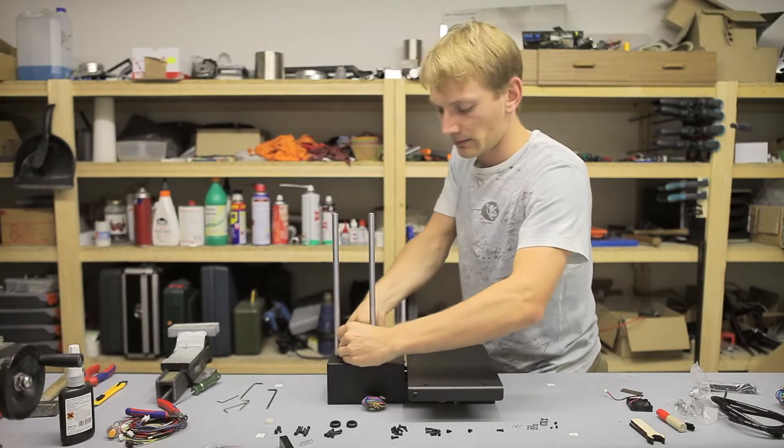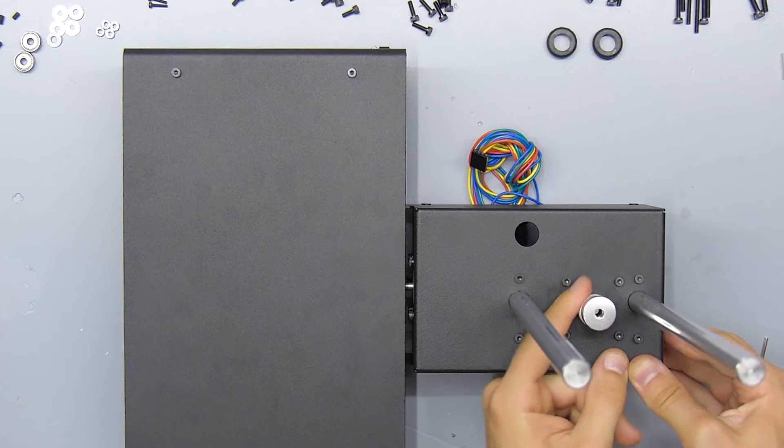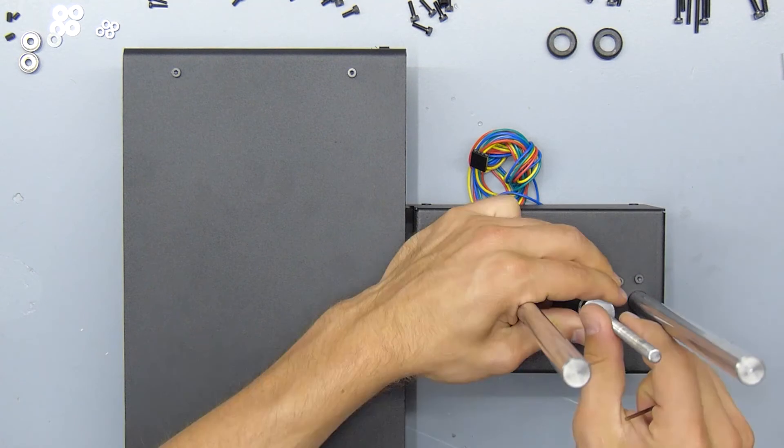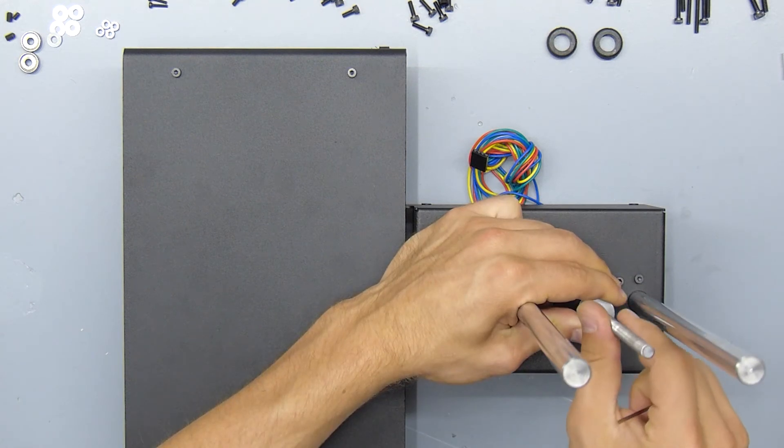Now, the coupler has two ends, one with a bigger and one with a smaller hole. If you install it upside down, it will wobble around like this. If installed correctly, it will look much smoother.